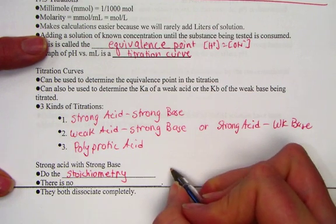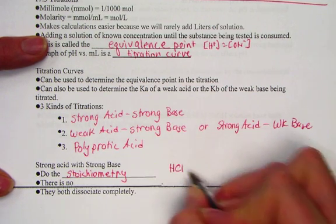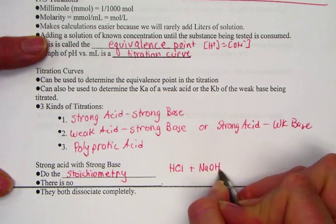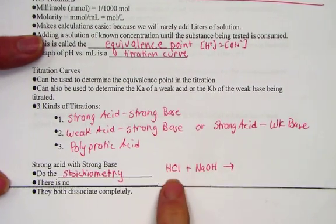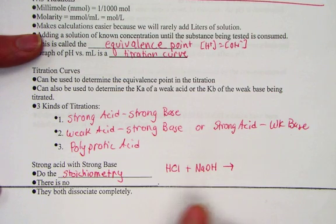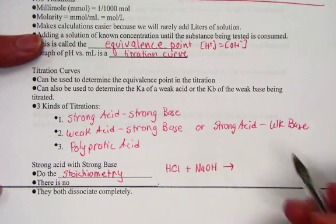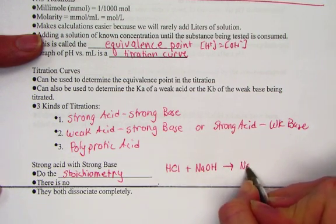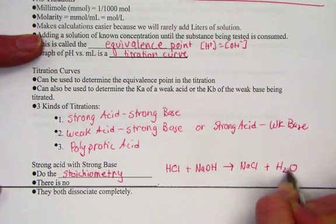Remember, and just to give an example, if HCl is being titrated with NaOH, this would be an example of a strong acid with a strong base. We recognize the single displacement pattern, where we produce a salt, NaCl, and water.